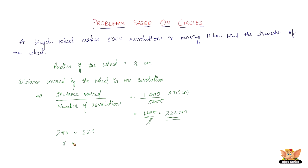Therefore, r equals 220 over 2 times 22/7, because π equals 22/7. This is 220 times 7 over 22 times 2. So 22 goes 10 times into 220, and 2 goes 5 times into 10, which gives us 5 times 7, that is 35 centimeters.